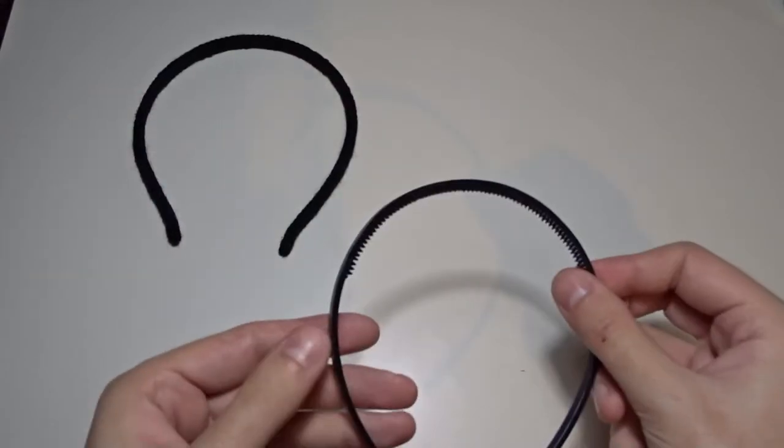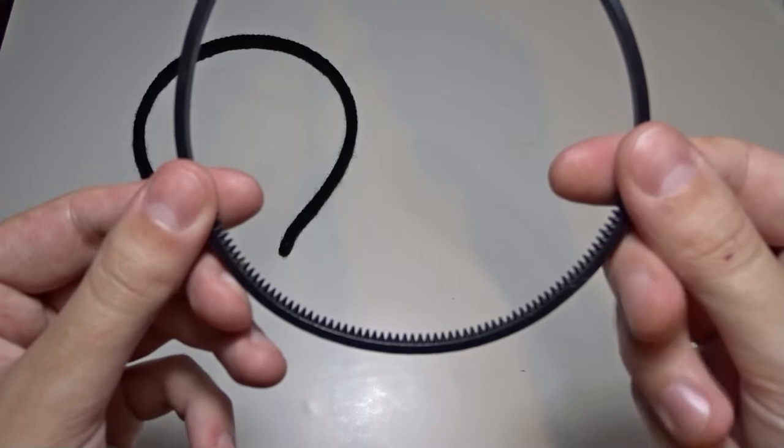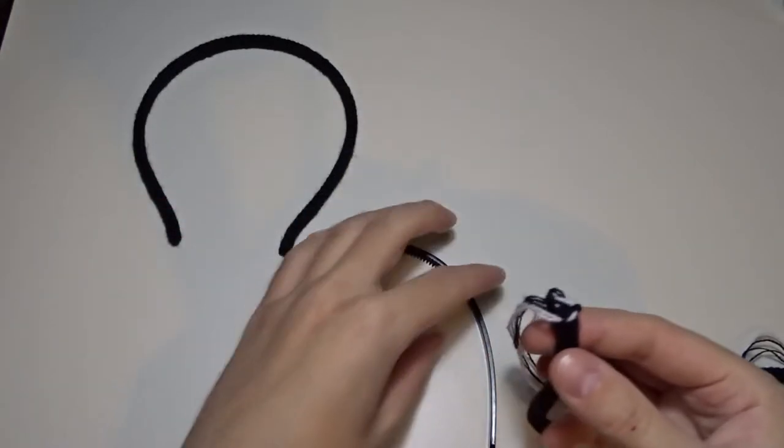Some diadems have a tooth part in the middle, but you can fix them the same way. That's the one I showed you at the beginning of the video.